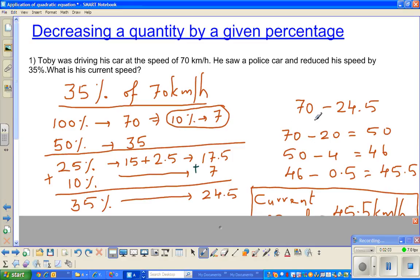Then I've shown you how to take away 70 take away 24.5. That's difficult, so I've done it in steps. First I took away 20: 70 take away 20 is 50. Then I take away 4: 50 take away 4 is 46. Then 46 take away 0.5 is 45.5. Can you see? You're taking away 20, then 4, then 0.5. So his current speed is 45.5.